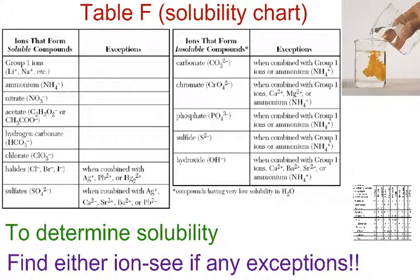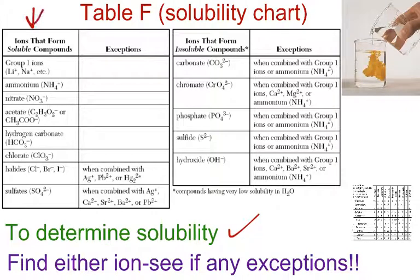Table F is very, very simple to use. You simply have to first determine what your compound is. You'll be given a compound, so you look at the solubility from there in a particular column. You have a soluble column right here, and you have an insoluble column over here. Now, you have to choose a particular ion in the compound that they give you.